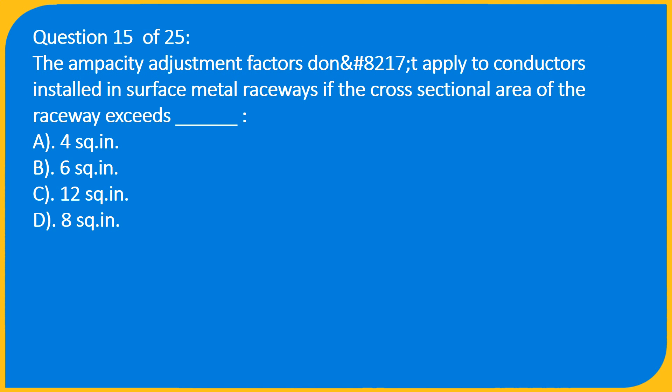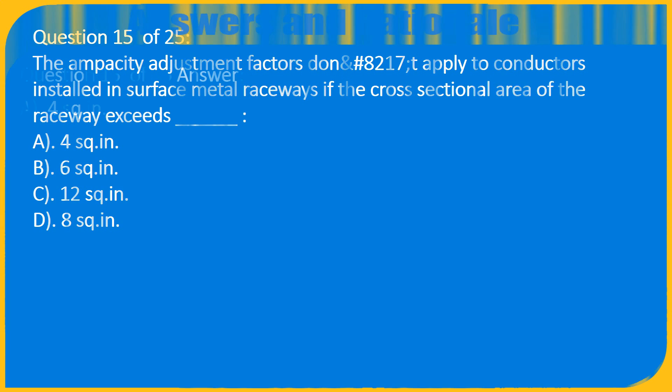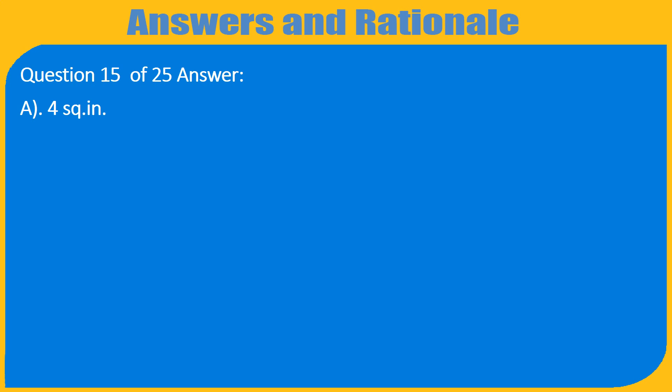Question 15 of 25: The ampacity adjustment factors do not apply to conductors installed in surface metal raceways if the cross-sectional area of the raceway exceeds how many square inches? A. 4 sq. in., B. 6 sq. in., C. 12 sq. in., D. 8 sq. in. Answer: A. 4 sq. in.